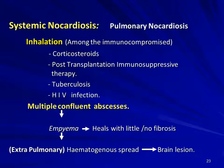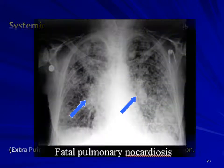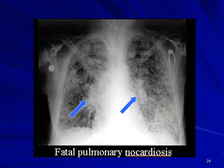The commonest presentation of systemic nocardiosis is pulmonary nocardiosis, with multiple confluent abscesses in the lung and formation of empyema. This empyema heals with little or no fibrosis and can lead to hematogenous spread to the brain, producing brain abscesses. The chest X-ray shows diffuse opacities in the lung fields because of empyema.